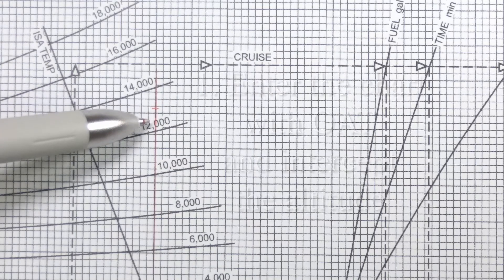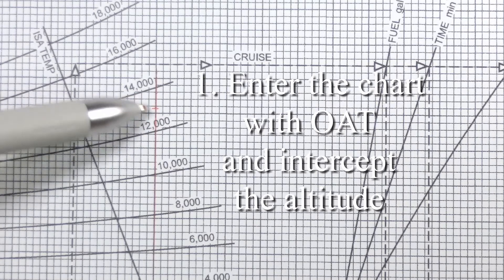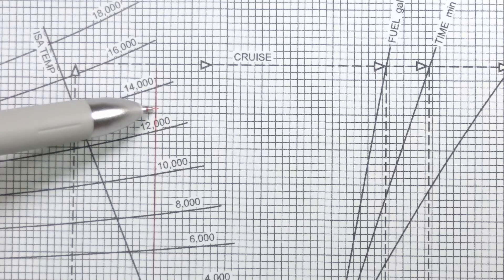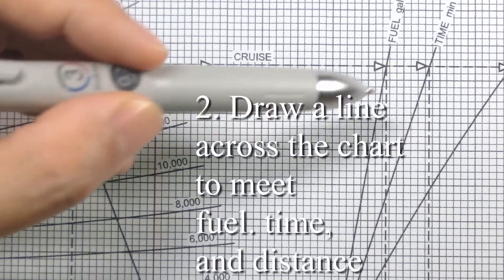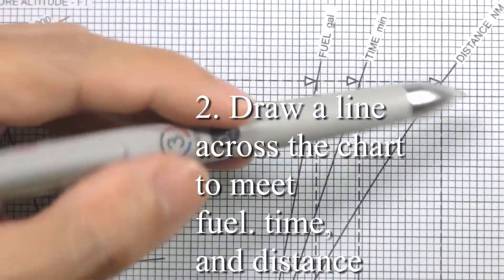And it should look something like this. You can see that I've put a mark at 13,000 feet where I've interpolated between these two values 12,000 and 14,000. I've drawn a little dash to show you where that should be and now I'm going to draw a line across the chart to meet fuel time and distance to climb.